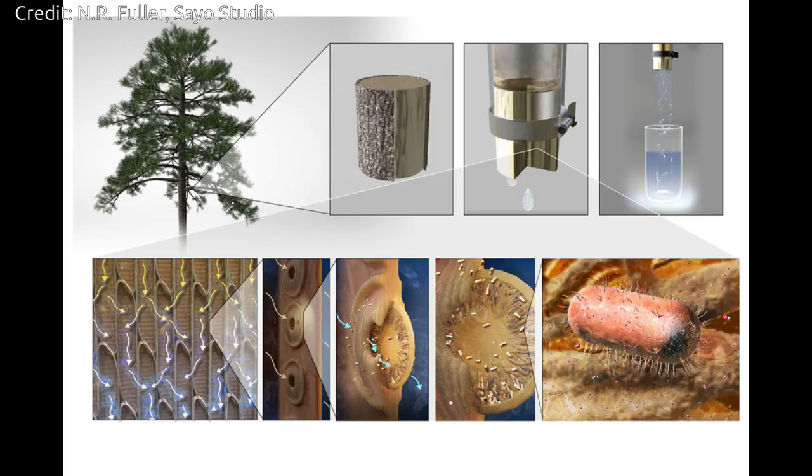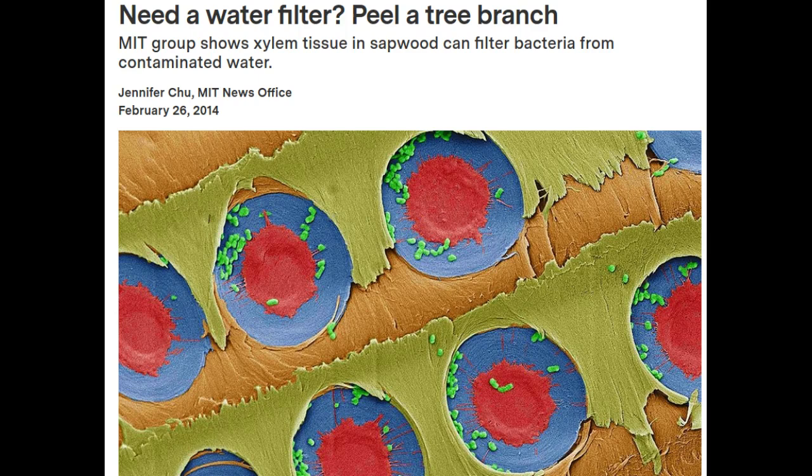Xylem conduits are interconnected via thin membranes that act as natural sieves, filtering out bubbles from water and sap. MIT engineers have been investigating sapwood's natural filtering ability and have previously fabricated simple filters from peeled cross-sections of sapwood branches, demonstrating that the low-tech design effectively filters bacteria.